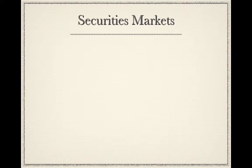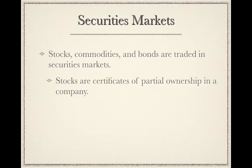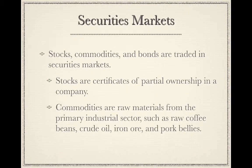Stocks, commodities, and bonds are traded in securities markets. Stocks are certificates of partial ownership in a company — if you own stock in Apple, you own part of the company. Commodities are raw materials from the primary industrial sector, such as raw coffee beans, crude oil, iron ore, and pork bellies.